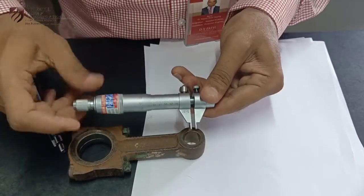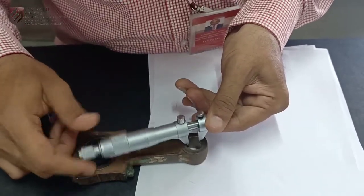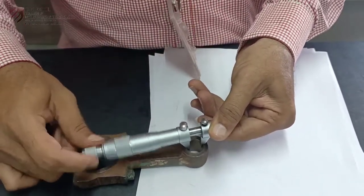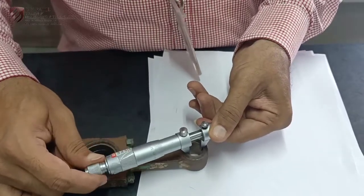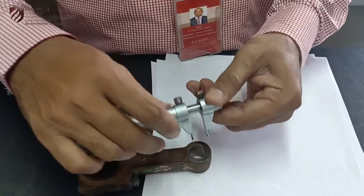Initially you have to rotate it in clockwise direction, it will go inside this. Again just slightly rotate it so that it touches the component correctly, then lock it and take it outside.